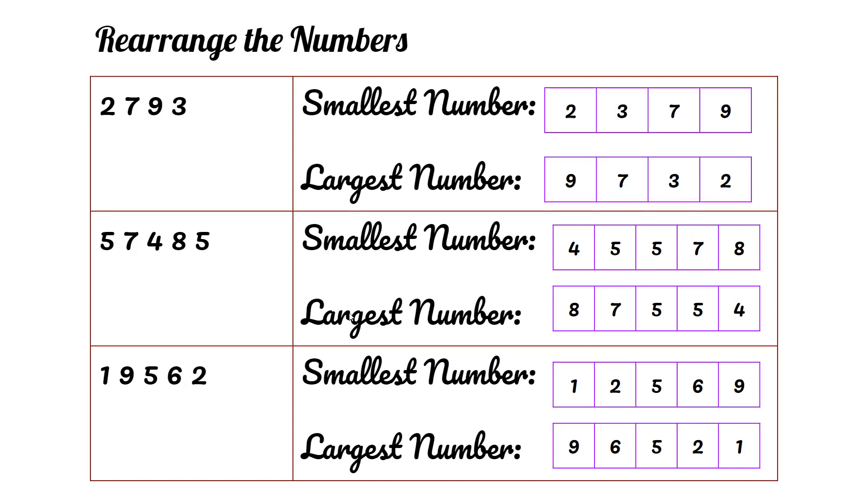Largest number is 8, then 7, then 5, then 5, then 4. So the largest number is 87,554.